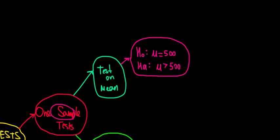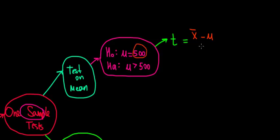So what kind of test do we run? It depends on the sample size - we could either run a t-test or a z-test. For this example, let's work with a t-test. The t-test measures the difference between the sample mean we calculate and the population mean under the null hypothesis, which would be 500. We want to know how much this difference is in terms of standard errors, where the standard error is the standard deviation of the sample divided by the square root of n.